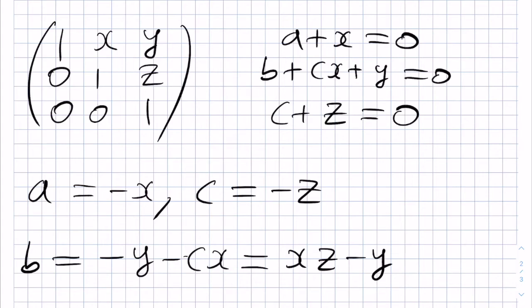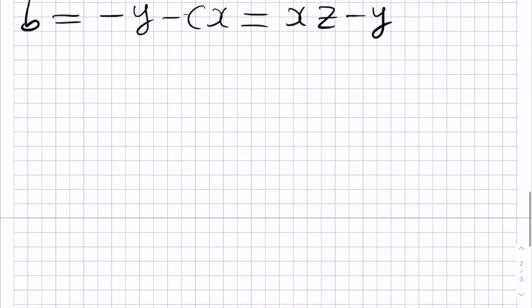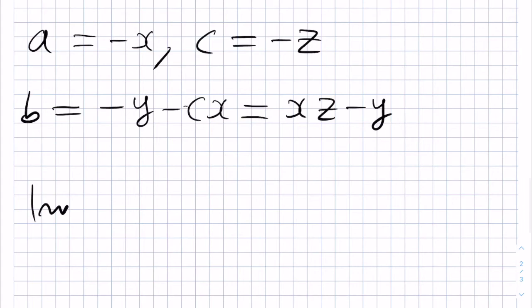Hence, for the matrix 1XY, 0, 1Z, 0, 0, 1, we have the following inverse matrix, which is 1 minus X for A, XZ minus Y for B, 0, 1 minus Z for C, and then 0, 0, 1.